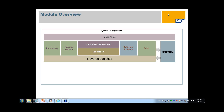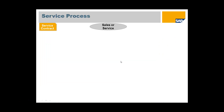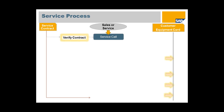Here is a brief review of what we talked about last week. The service module happens after you sold the item, and it could also trigger reverse logistics. Once you sold your item, the system created two information structures. One is a service contract. The other one is the customer equipment card. The customer equipment card is a central location that records everything — all the transactions that happened to this equipment, including when it was purchased, what goods were received, when it was shipped out to the customer, and when it comes back for service or return to a warehouse.